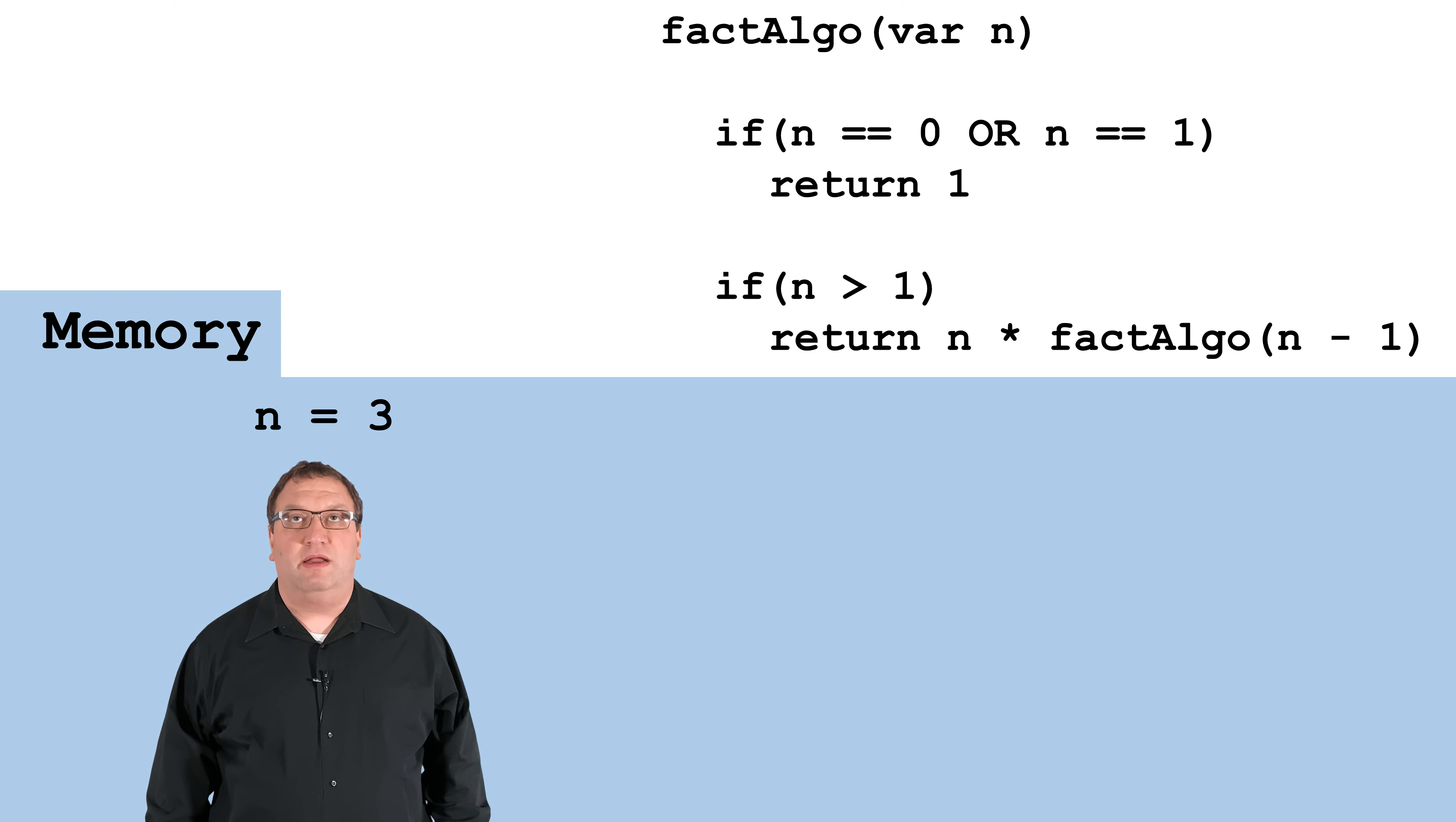Now we're going to trace through the pseudocode, and I'm going to play the part of the fact-algo method. I'm the first call of fact-algo. Let's see what they gave me for n. n is 3, so we're going to solve for 3 factorial.